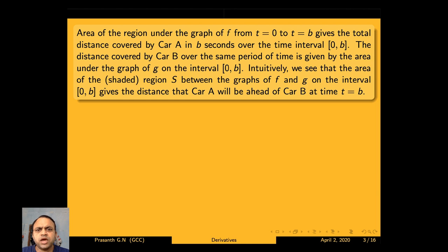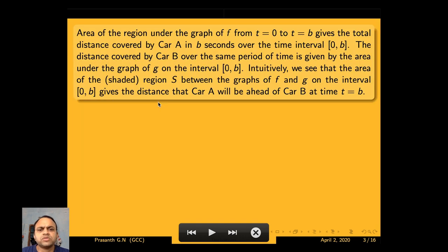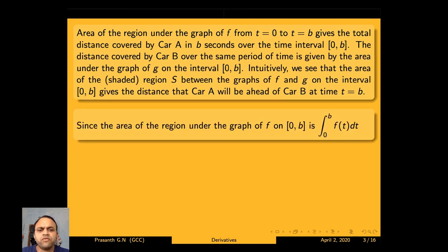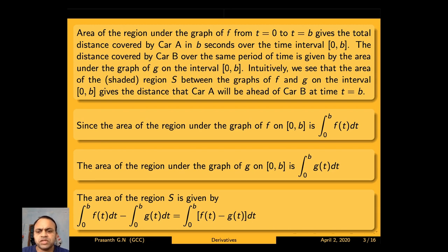Similarly, the distance covered by car B over the same period is given by the area under the graph of g on the interval [0, b]. Intuitively, the shaded region s between the graphs of f and g on [0, b] gives the distance that car A will be ahead of car B at time t. The total shaded area is: integral 0 to b f(t) dt minus integral 0 to b g(t) dt, or integral 0 to b [f(t) − g(t)] dt.